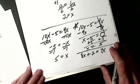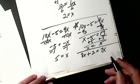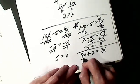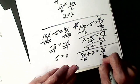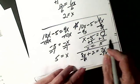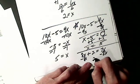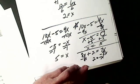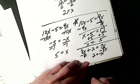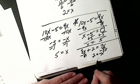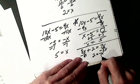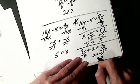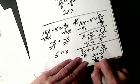Depending on how you do it, if I subtract 8X, subtract 8X, I'll get 2 equals negative X. Divide by negative 1, so I'll get X equals negative 2.